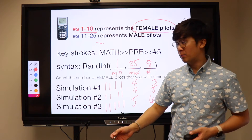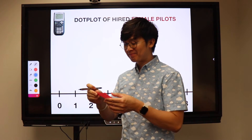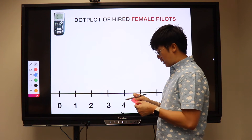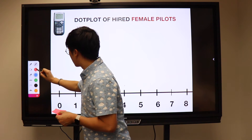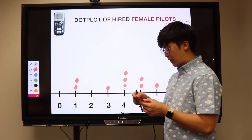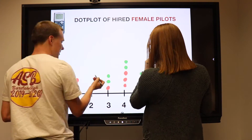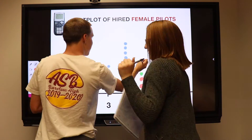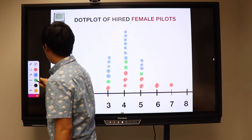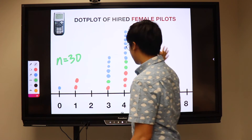It's all about graphs, data, and numbers. What we're going to do is a dot plot. I'm going to do mine and you're going to do yours — come here and let's plot points. Out of 30 simulations, we're able to produce this dot plot.